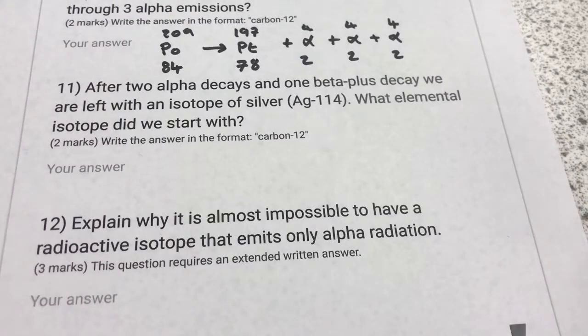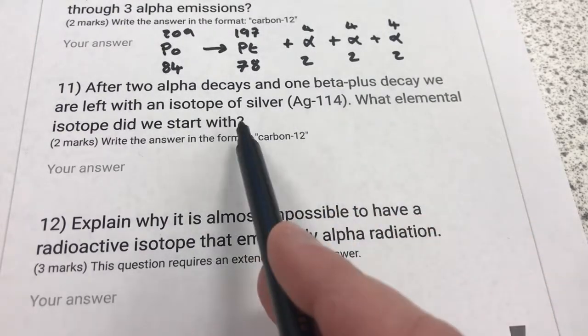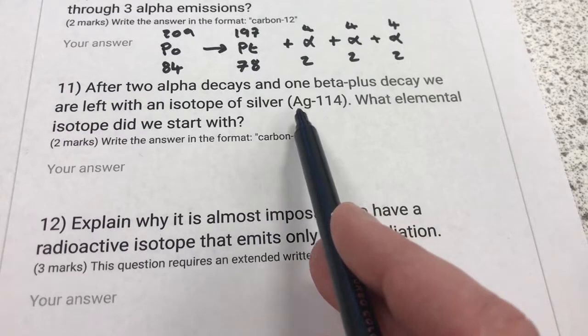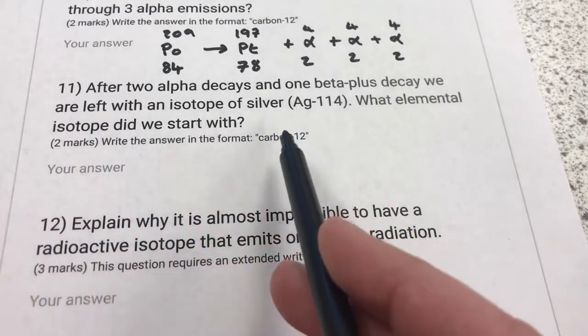M6C4, homework 5-6, question number 11. After two alpha decays and one beta plus decay, we are left with an isotope of silver, silver 114. What elemental isotope did we start with?